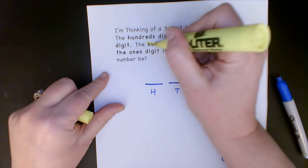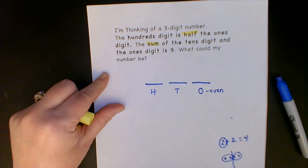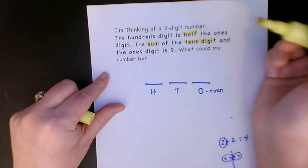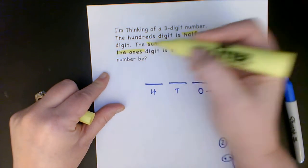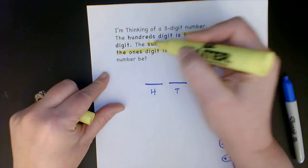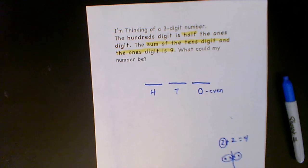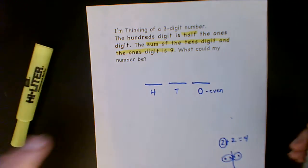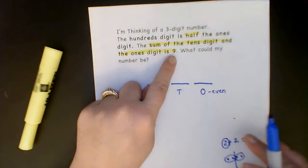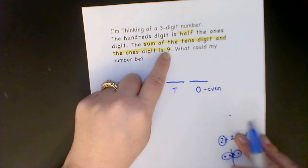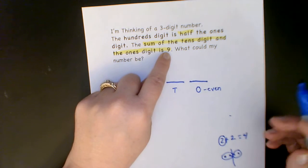Okay, now the other part is sum, which we know means the answer when we add, of the tens digit and the ones digit is nine. Let's just highlight that whole thing.